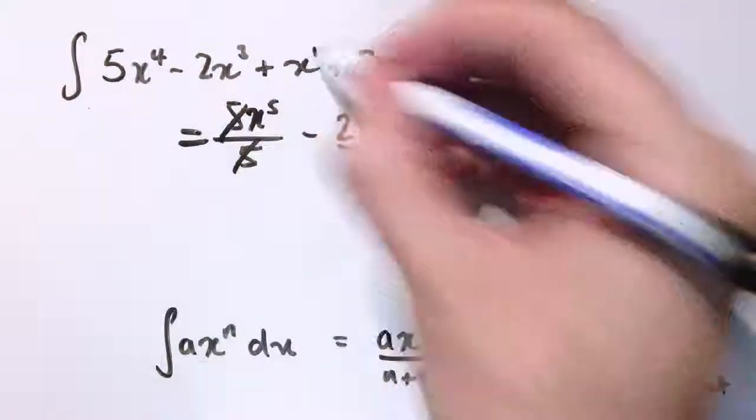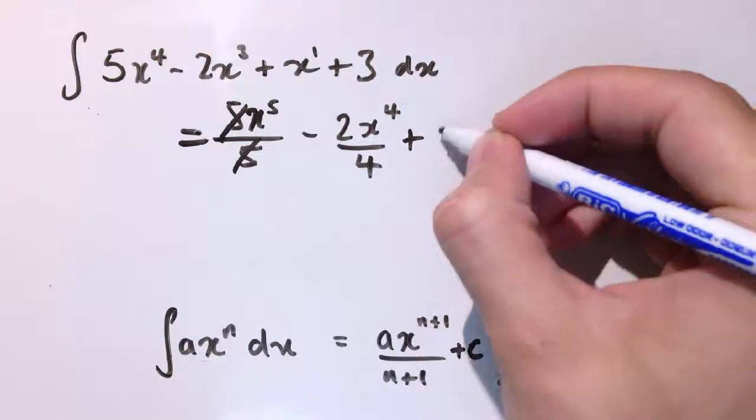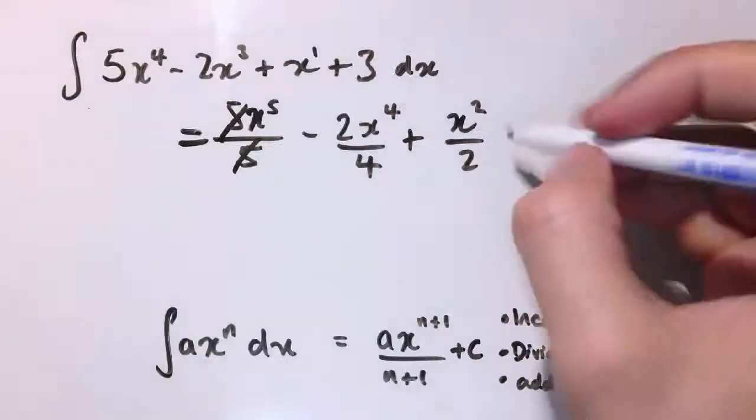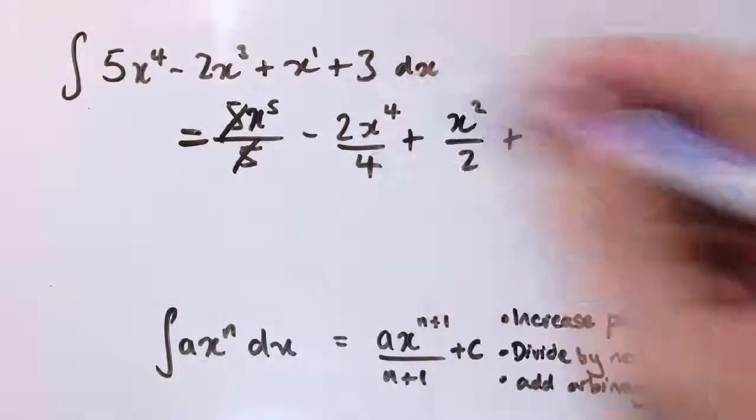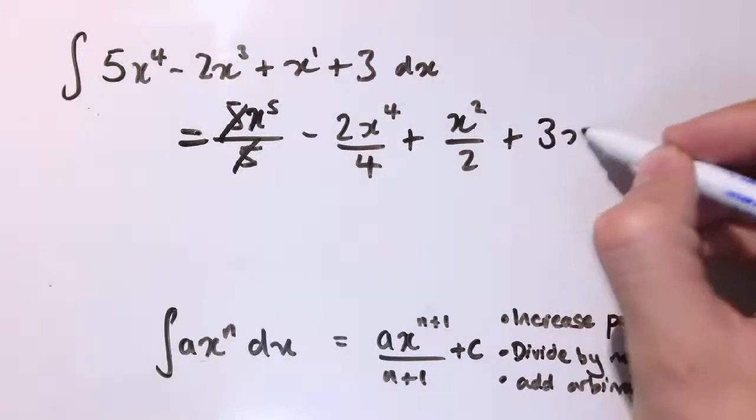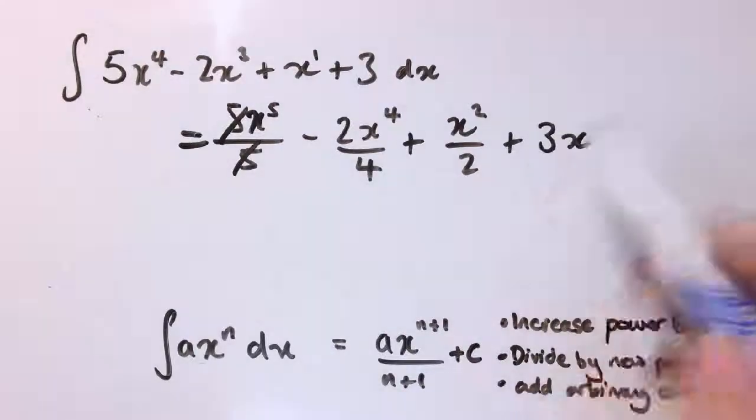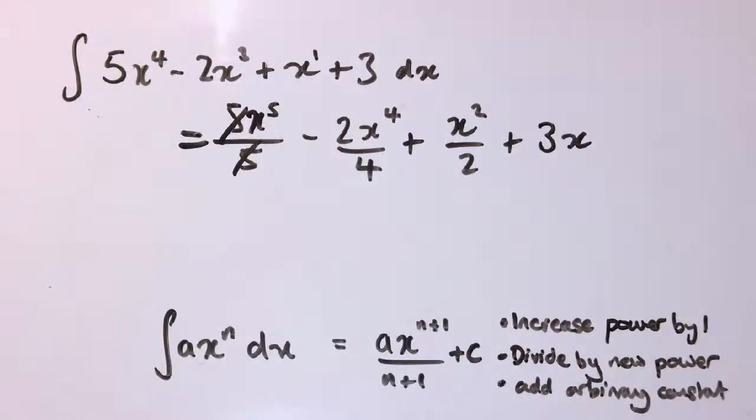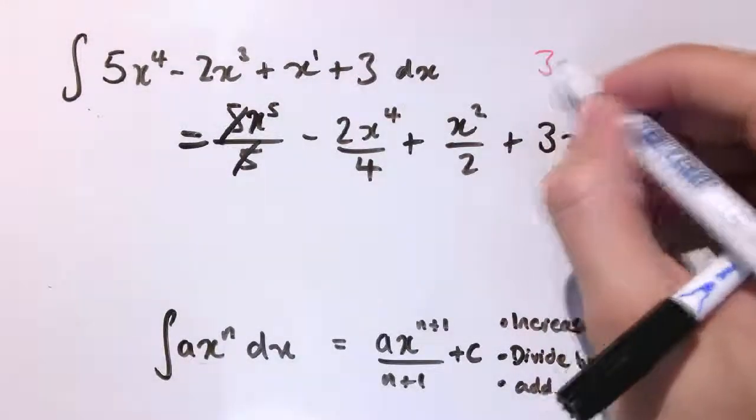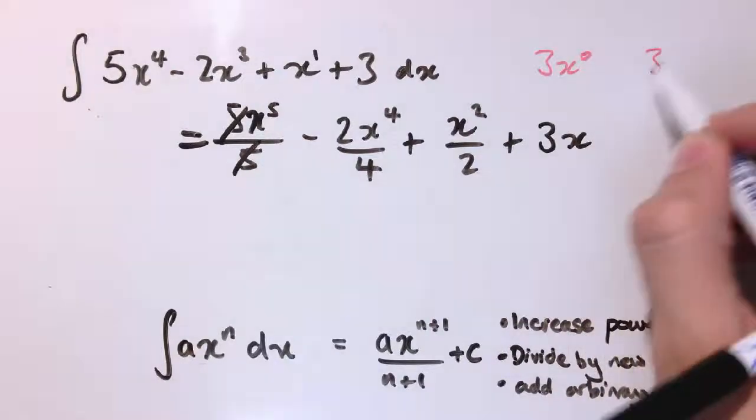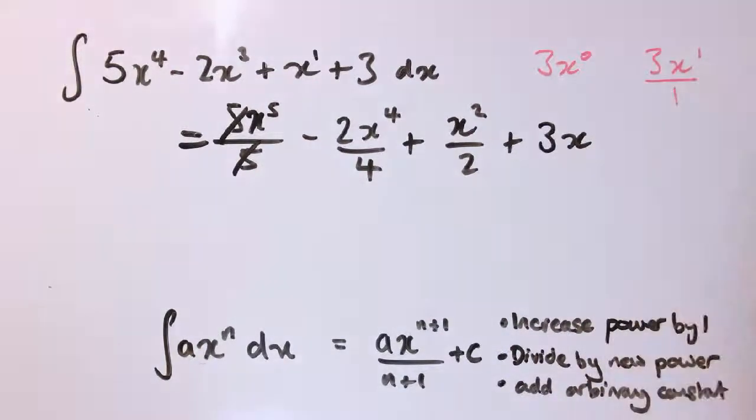x is just x to the 1, so I'm going to add here x squared over 2, increase the power, divide by the new power. And 3, we know integrates to 3x because we're just saying what function has constant gradient 3? And we know that's the straight line 3x. If you want to, we could also think about 3 as being 3 times x to the 0. So we increase the power from 0 to 1 and get 3x to the 1, and divide by the new power which is 1. But of course x to the 1 is just x, and dividing by 1 keeps it the same, so that gives us 3x.